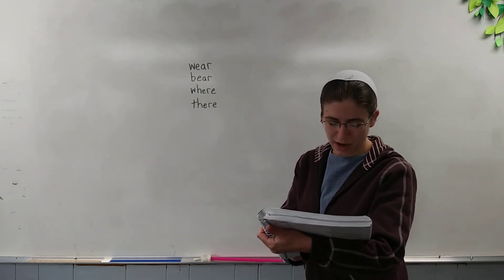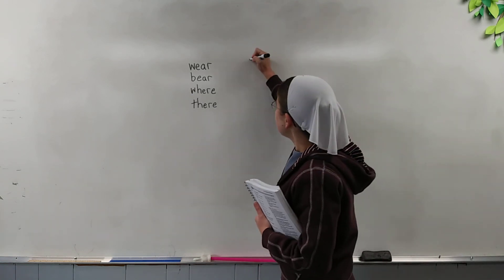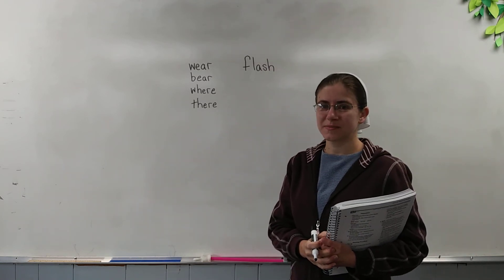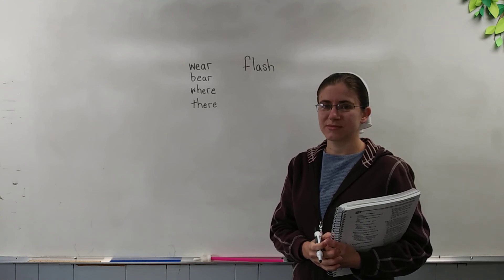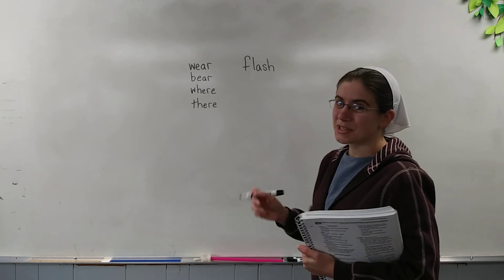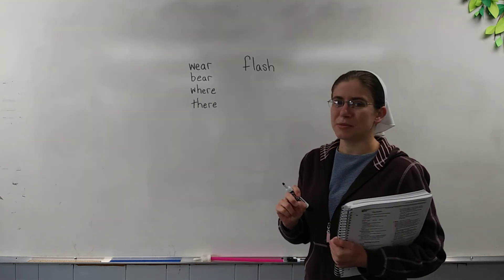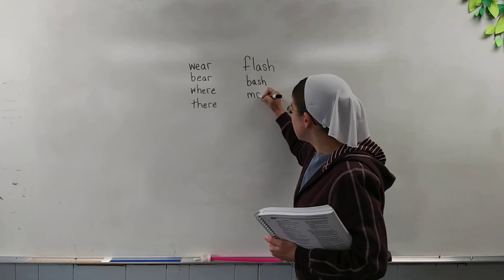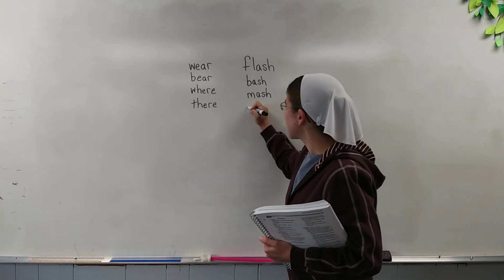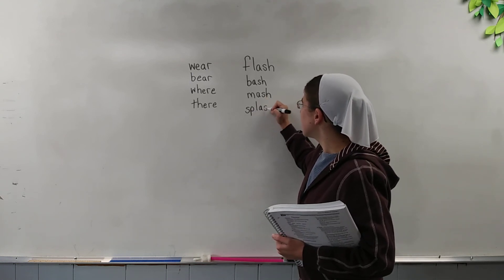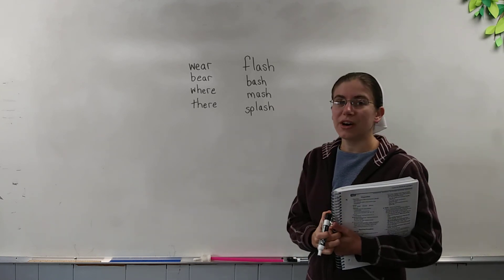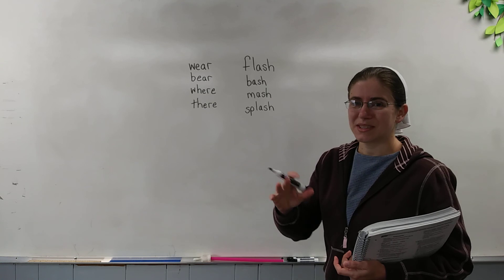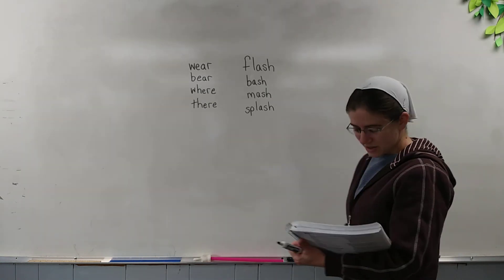The next one: write a rhyming word for the word flash. Here's the word flash. Write a word that rhymes with flash. Remember, you can pause the video if you're not done yet. A word that rhymes with flash could be bash, or mash — like 'I'm going to mash the potatoes' — or it could be splash. Those are all words that rhyme with flash. They all end with the 'ash' sound. A word that rhymes is going to end with the same sounds as the word before it.